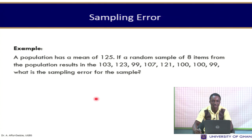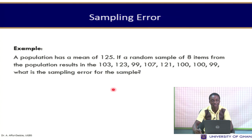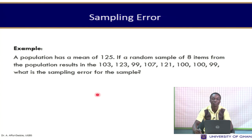Another question on sampling error: we have a population with a mean of 125. Given that a random sample of 8 items from the population results in the values 103, 123, 99, 107, 121, 100, and 199, what is the sampling error? Put together all these values, find the sample mean, then take the difference between the sample mean and the population mean — this will give you the sampling error.